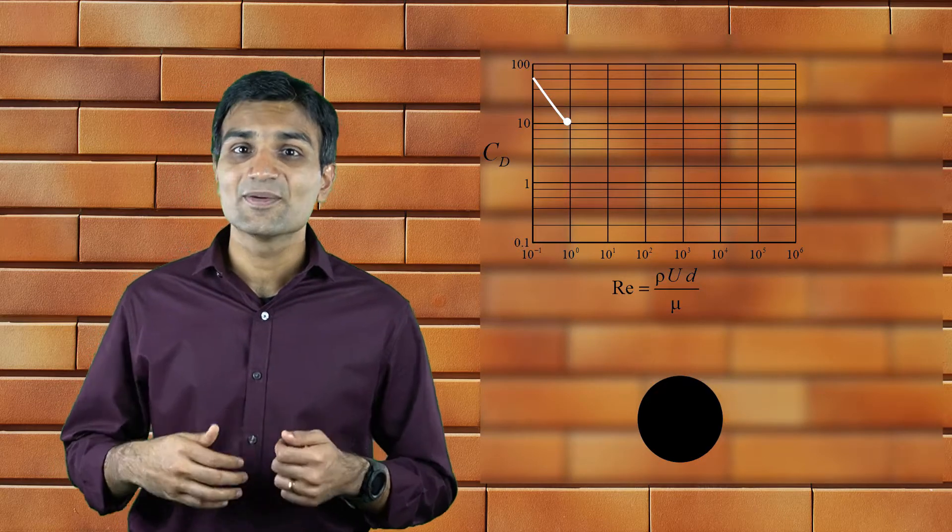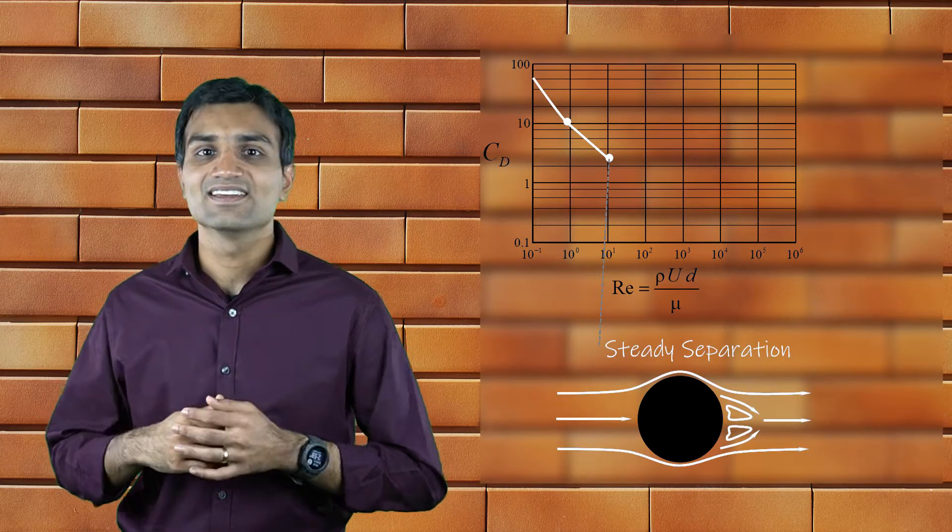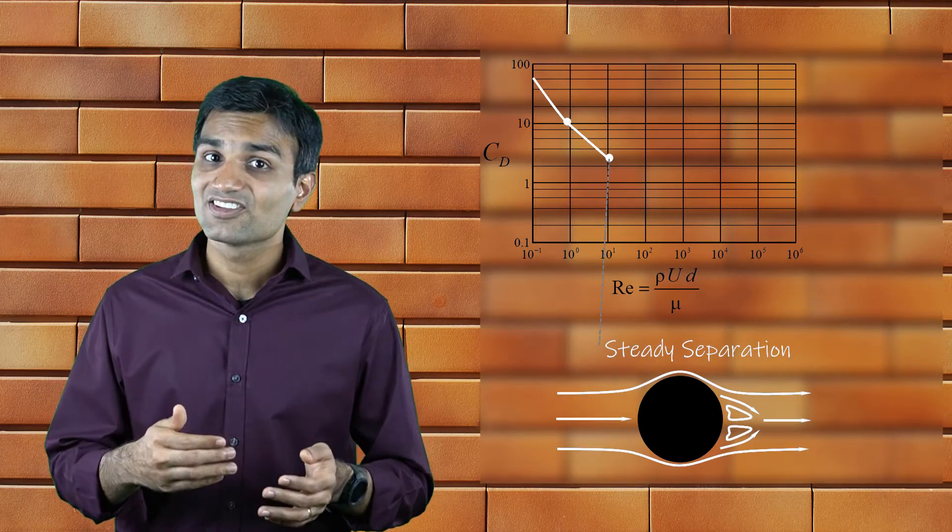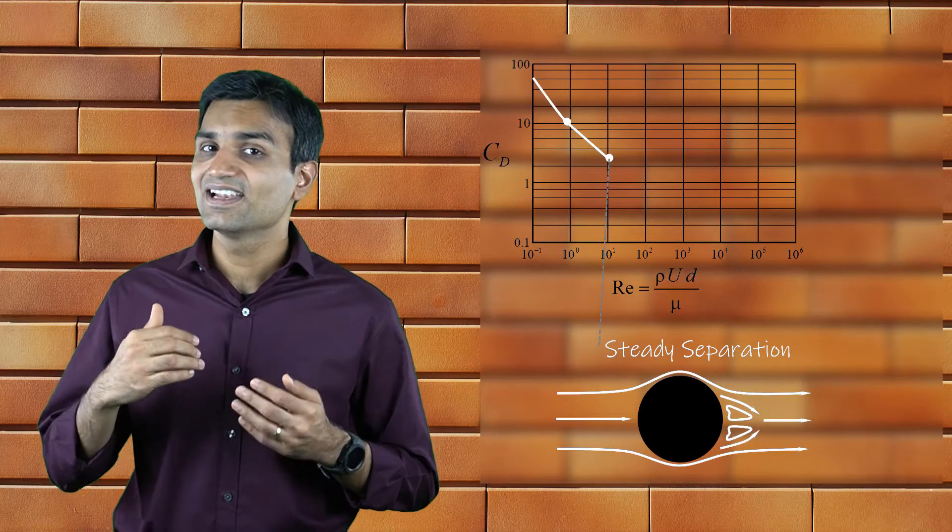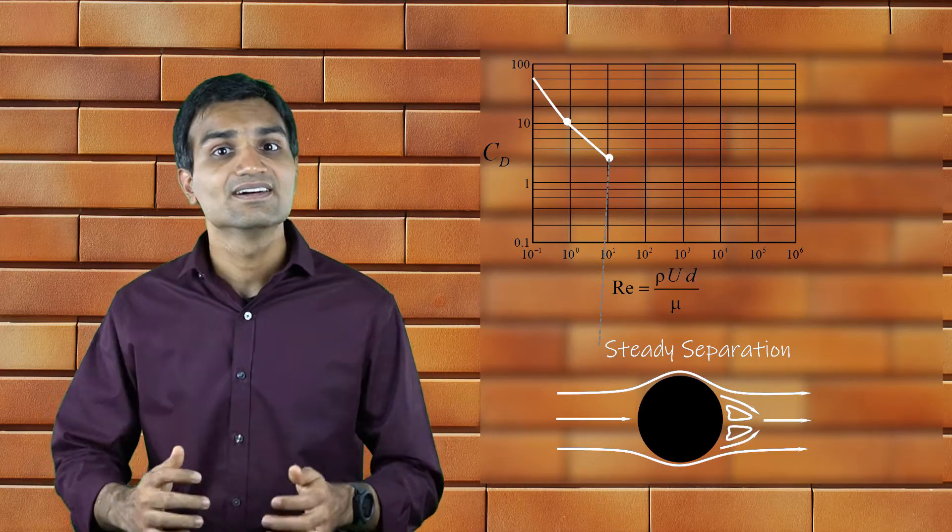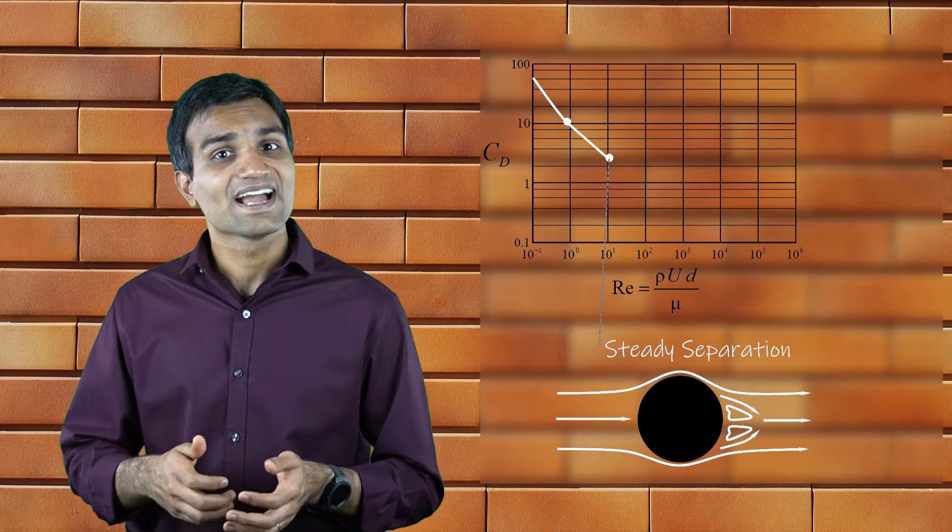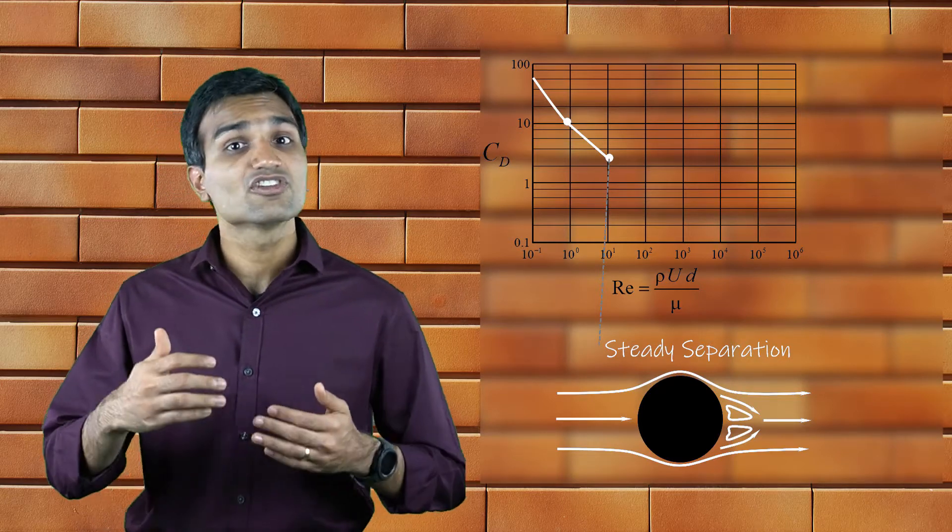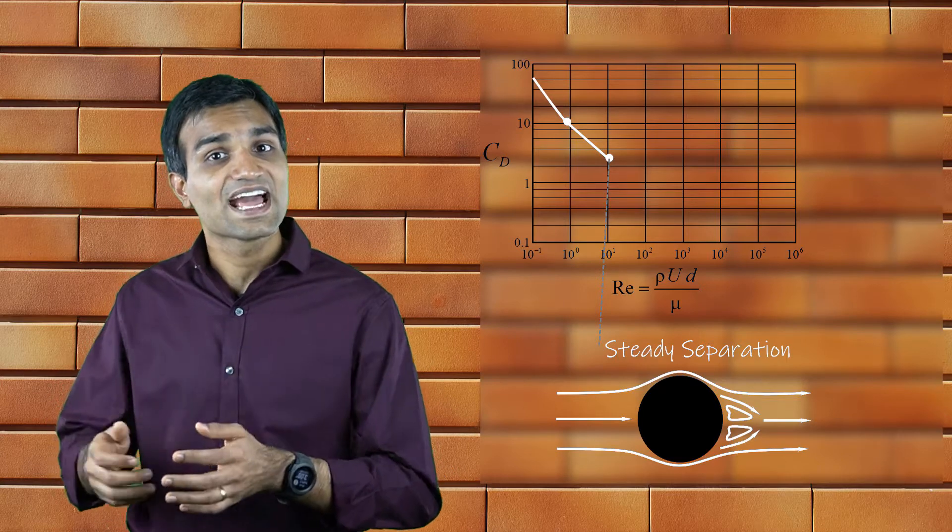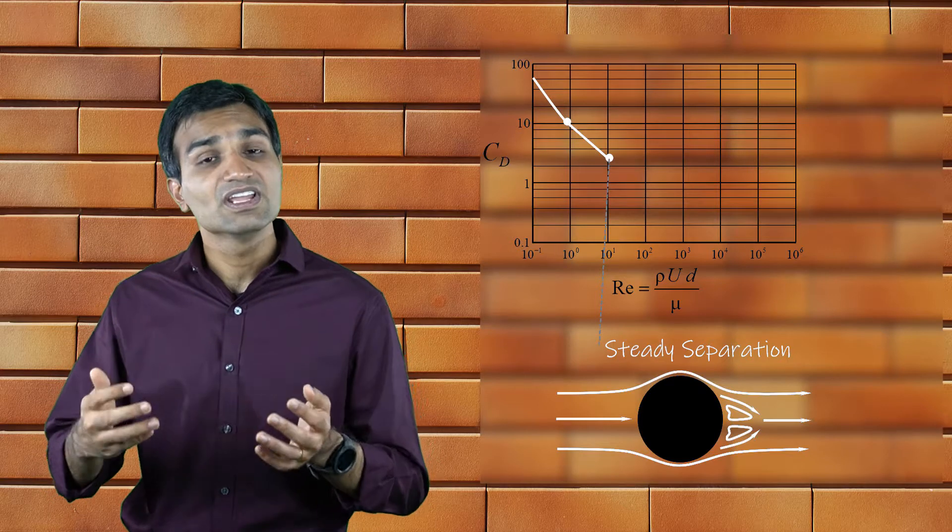As the Reynolds number increases slightly, we have a steady separation of boundary layers. The separation as well as the recirculating zones at the top and bottom ends of the cylinder are symmetric. The total drag, which is a combination of both pressure and viscous drags, is lower for this case compared to the previous.